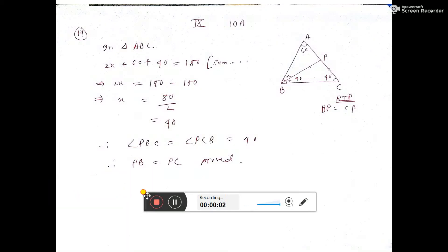Number 14. The question is, in triangle ABC, A is equal to 60 degrees that I have marked in the diagram. C is equal to 40 degrees that also I have marked.